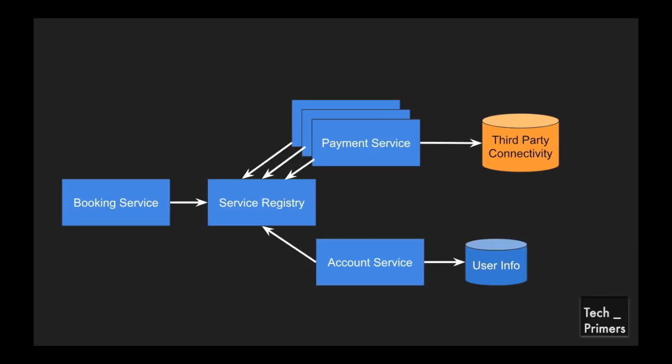Now, for the use case of the booking service accessing the payment service — since there are three different instances of the same payment service, they could be running on different machines, in different containers, or in different pods in a Kubernetes environment. You don't know how to load balance them, and especially when using a service registry, you need to load balance and redirect to a particular instance. That's when we follow the style of using either a client-side load balancer or a server-side load balancer.